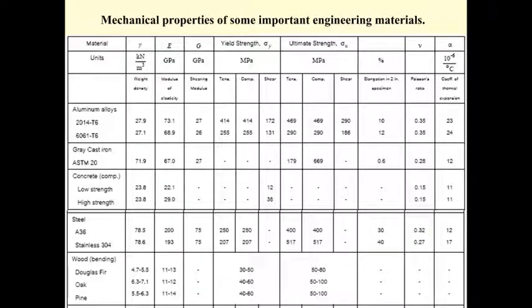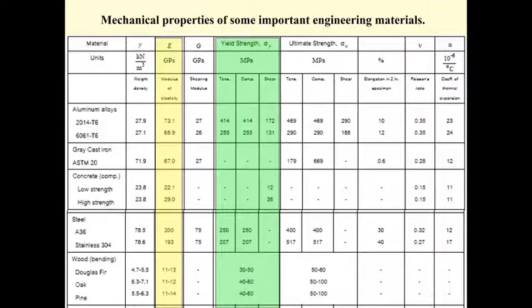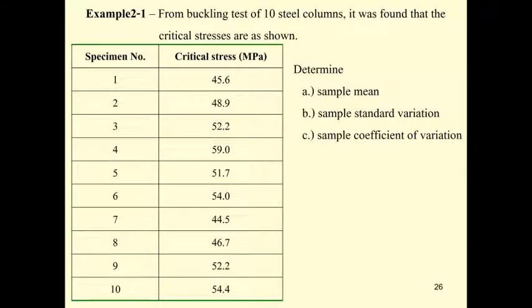Some material properties I need to mention here: E is the modulus of elasticity, which represents the stiffness of the material. The yielding strength represents the strength of the material.